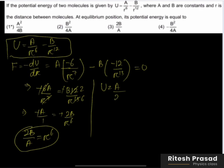Then minus B by r to the power 12. This becomes 4B square by A square.